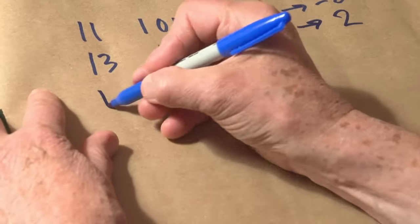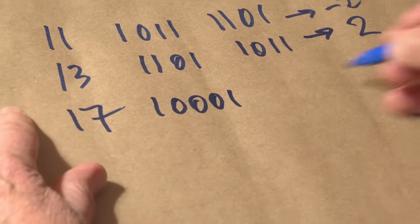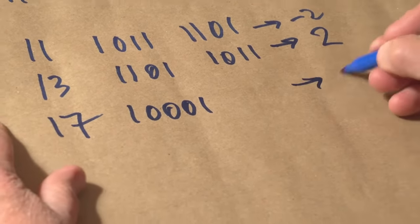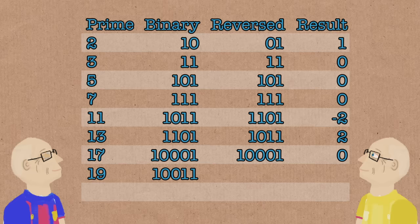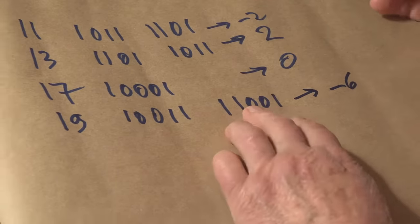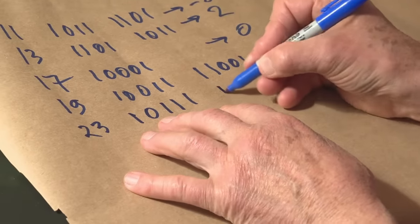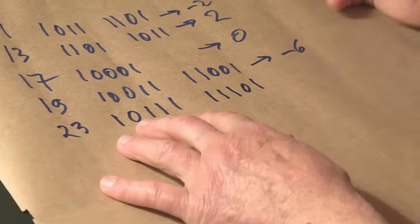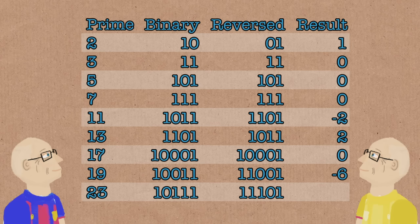The next one is 17, which is 1 0 0 0 1. And we reverse it, it's the same, and we get 0. 19, we get 1 0 0 1 1. Aha! 1 1 0 0 1, 25. So it's minus 6. After 19, what's the next prime? 23. When we reverse it, we get 1 1 1 0 1, which is 29. So 23 minus 29 seems to be minus 6 again. And so on. That's the sequence. Take the binary representation of n, subtract its reversal, and we get a number. It may be negative, maybe 0, maybe positive.